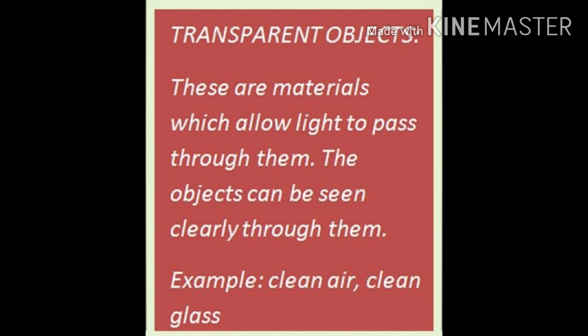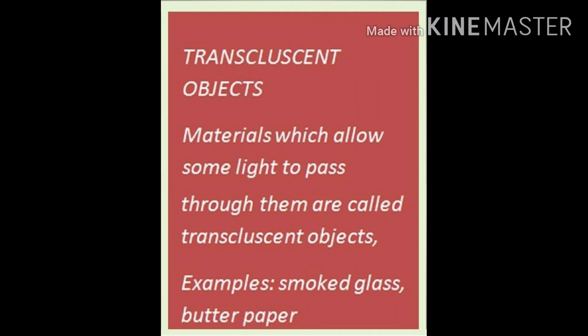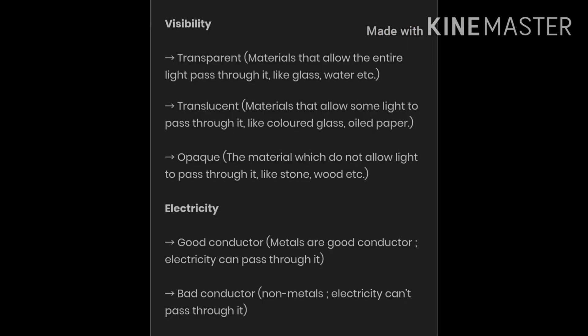Transparency refers to how light passes through substances. Substances through which light passes and we can see clearly are called transparent substances. Substances through which we cannot see — like a wooden door — are called opaque, because light does not pass through them. There are also substances through which we can see partially, like frosted glass or butter paper — this property is called translucency, and such substances are called translucent.